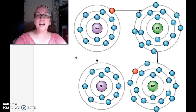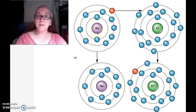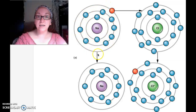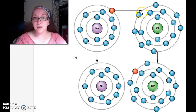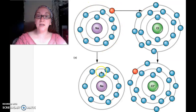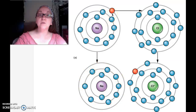Let's first look at ionic bonds. Now an ion, if you recall, is a charged particle, a charged atom. For example, this sodium atom here has two electrons in its first electron orbital, then eight in its second, and then one in its outer orbital. If it lost this last electron from its outer shell and gave it away, it would be one electron short — so it's a positive ion. It gave up an electron.